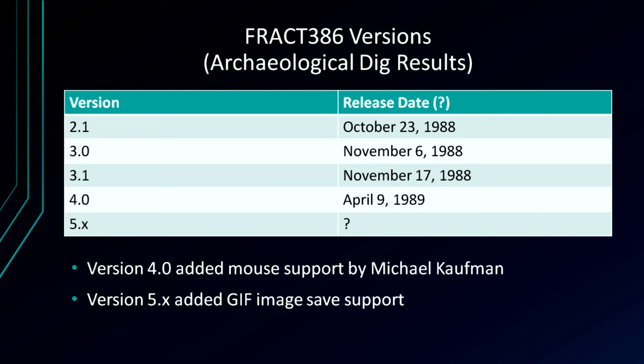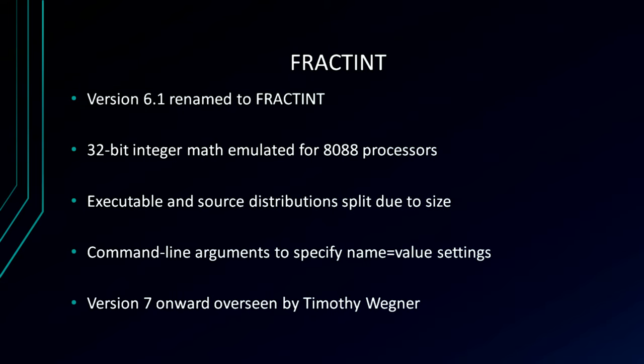Quickly he released more versions as he was adding features, proceeding through 1988 and 1989. Then in version 6.1, he renamed it to FractInt because he added 32-bit integer math emulation for 8088 machines that only had 16-bit math. Now it wasn't really a 386-specific program anymore — it was just FractInt, doing fractals using integer math.